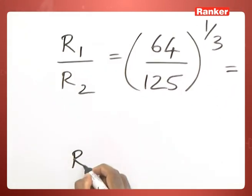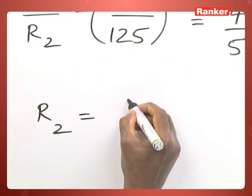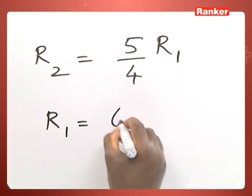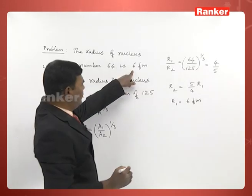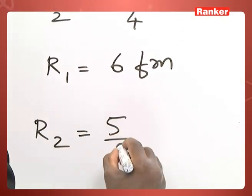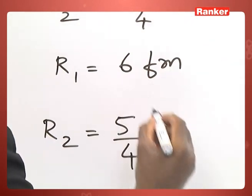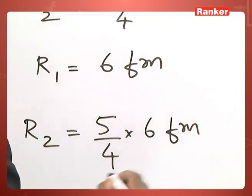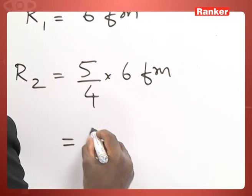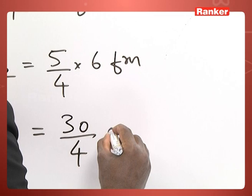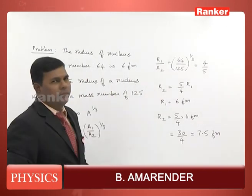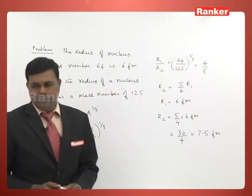From that, if you write the expression for R2, it will become R2 equals 5 by 4 of R1. Here R1 is given as 6 Fermi in the problem. So R2 is equal to 5 by 4 multiplied by 6 Fermi, which gives 30 by 4, or 7.5 Fermi. That is how we can determine the radius of the nucleus using that formula.